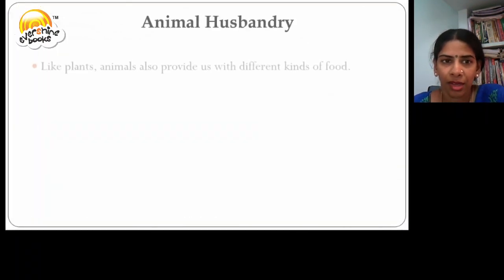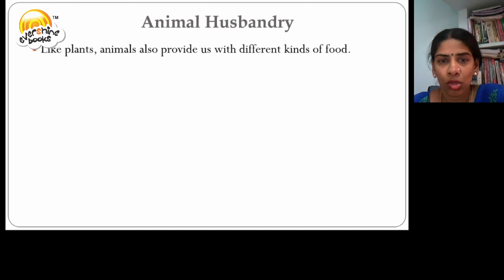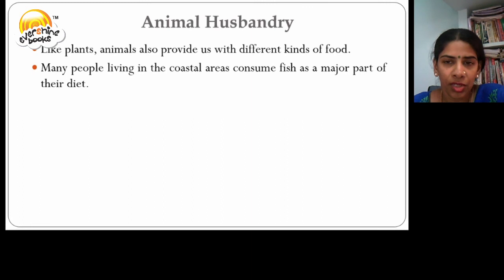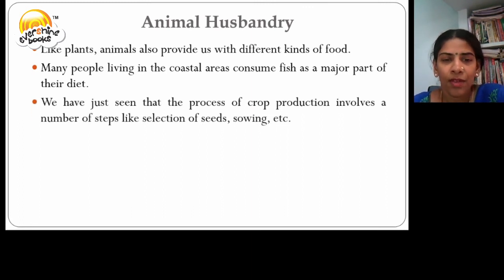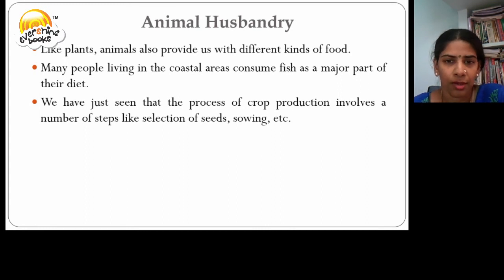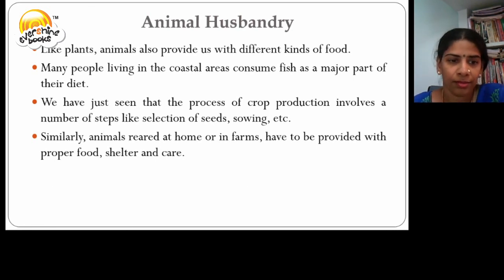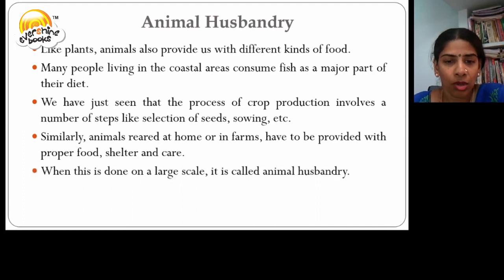Animal husbandry. Like plants, animals also provide us with different kinds of food. Many people living in coastal areas consume fish as a major part of their diet. Animals are also reared at home or in farms and provided with proper food, shelter and care. When this is done on a large scale, we call it animal husbandry.